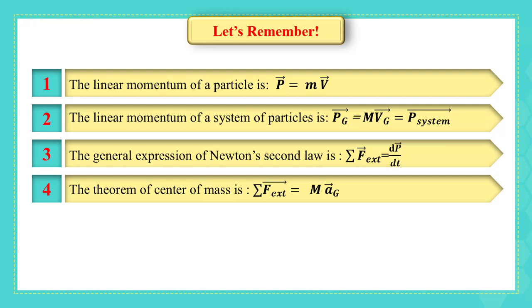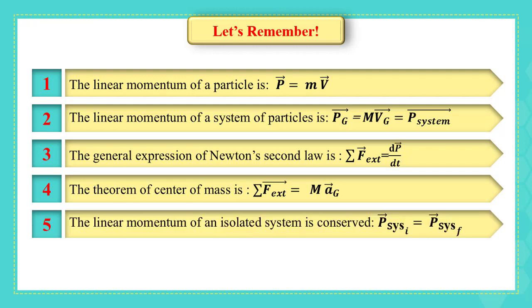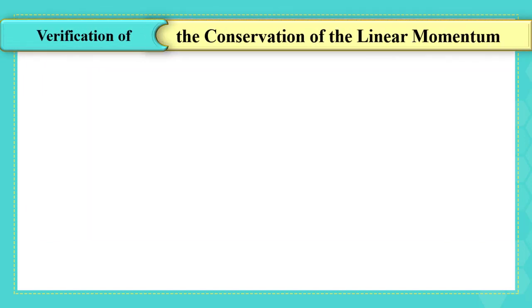The theorem of center of mass is sum of f external equals to the mass times the acceleration of the center of mass. The last idea, which is important in our study, the linear momentum of an isolated system is conserved, then the linear momentum initially of the system equals to the linear momentum finally of the system. You should have watched the previous video about verifying the conservation of linear momentum experimentally. In this part, we are going to re-explain the method in our way.